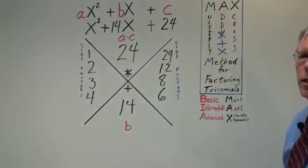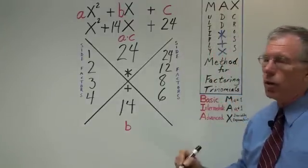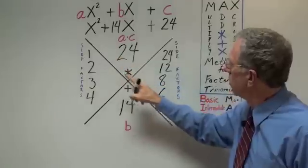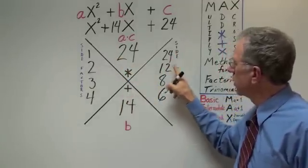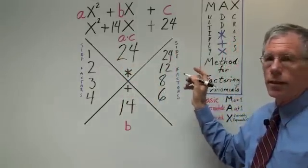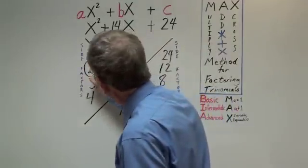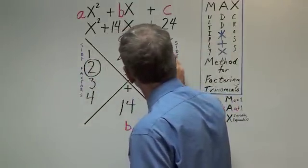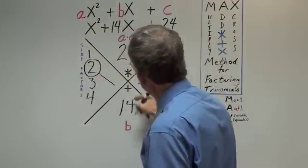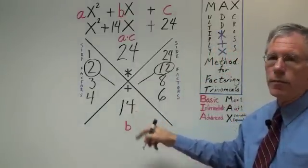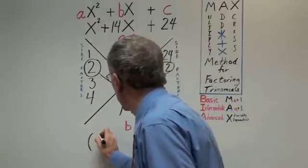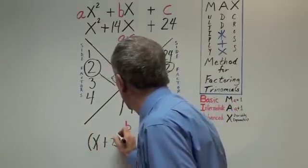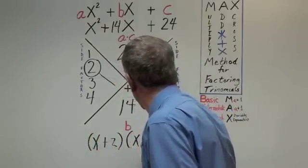Well, at this point, if you want to be very thorough, you say 1 plus 24 does not equal 14, 2 plus 12, we're done. So you circle the 2, you circle the 12, indicating that they give 14. At this point, you basically have the answer. You have x plus 2 times x plus 12.